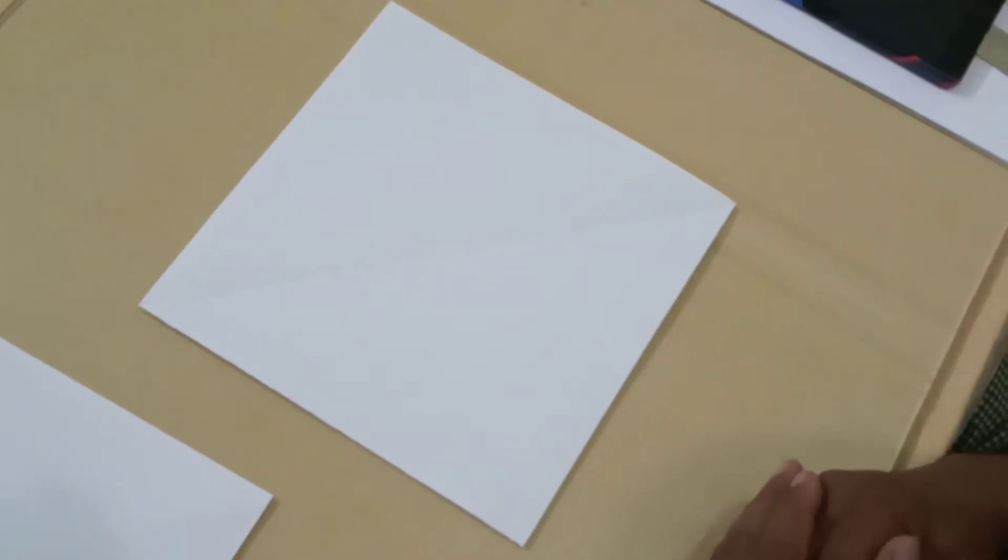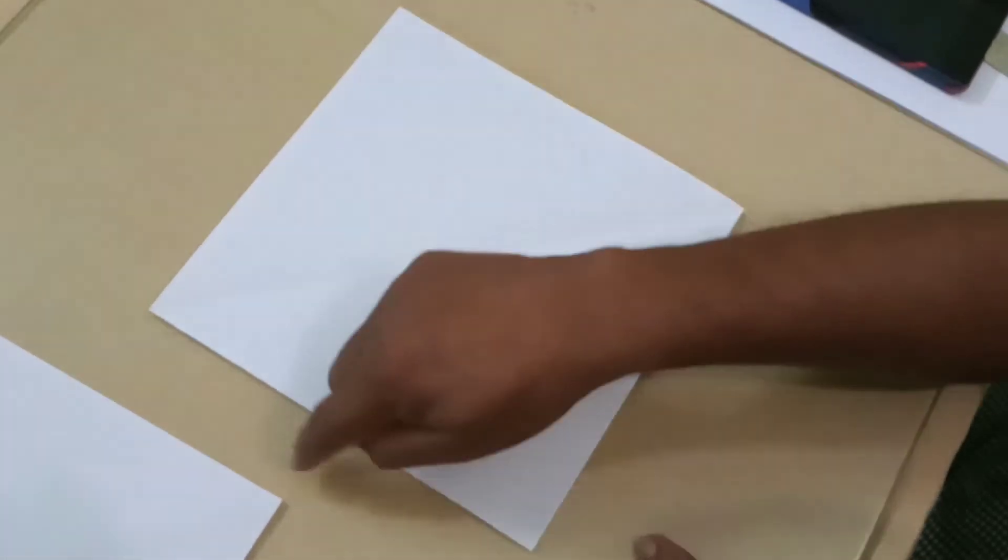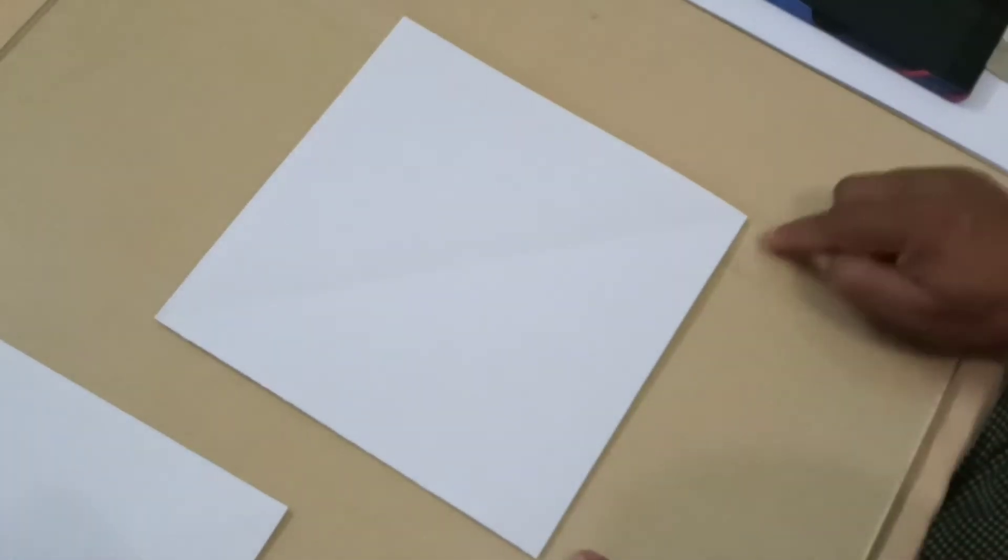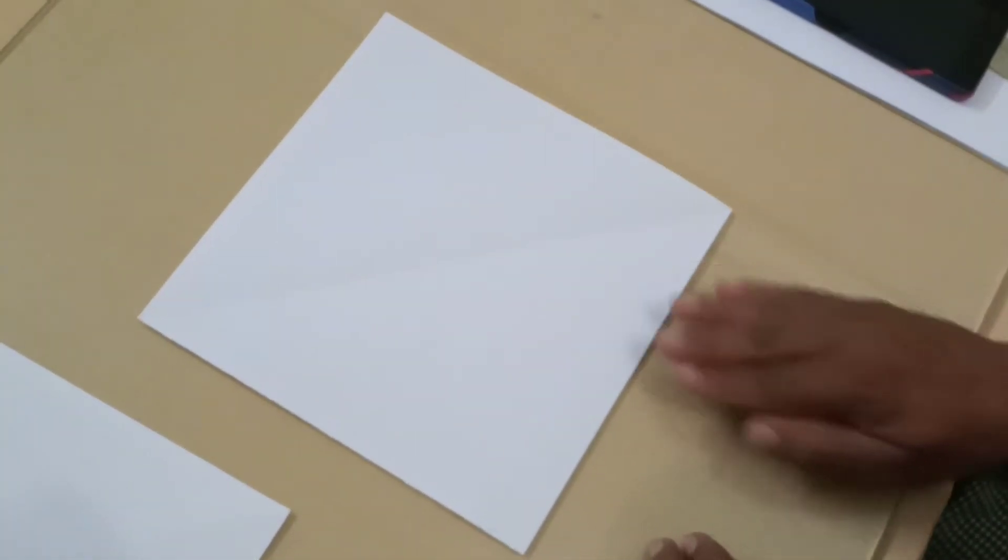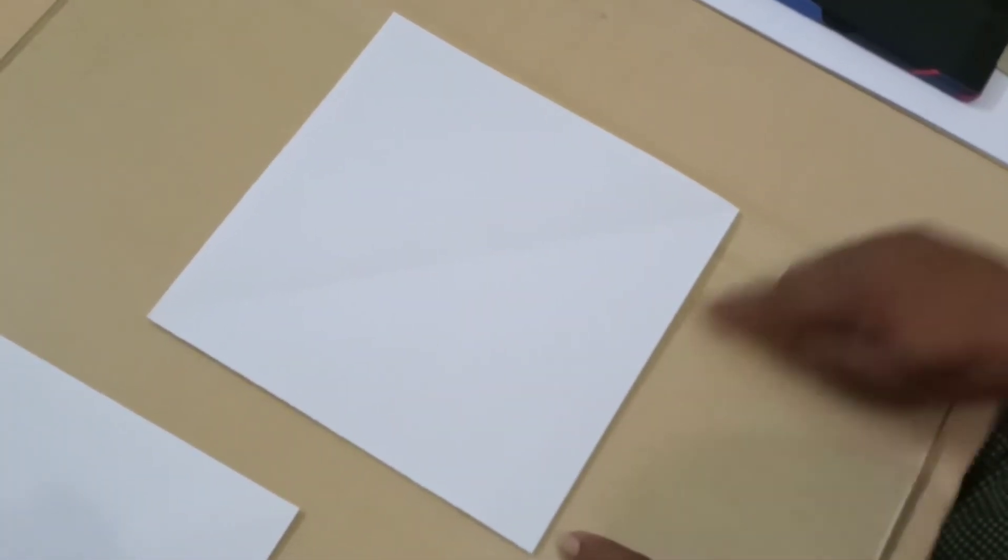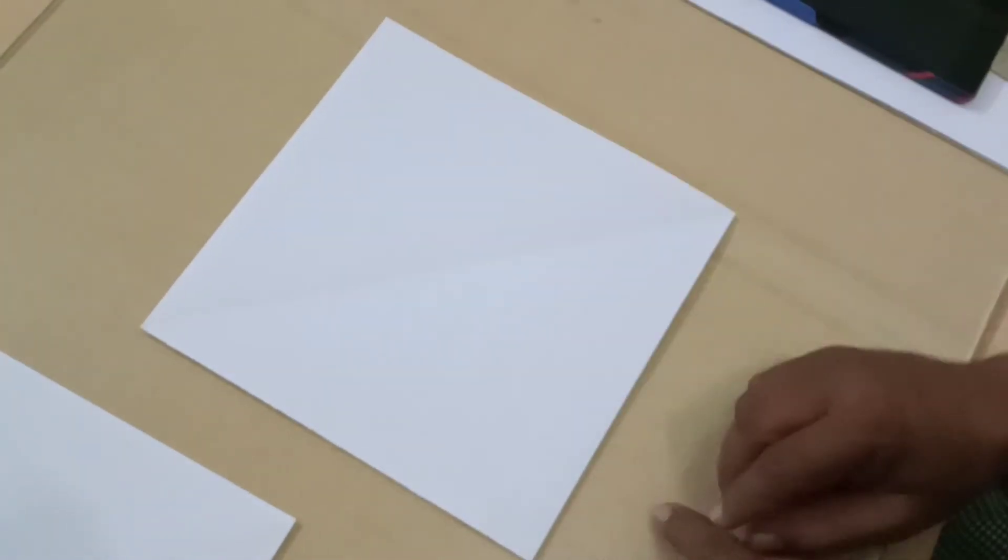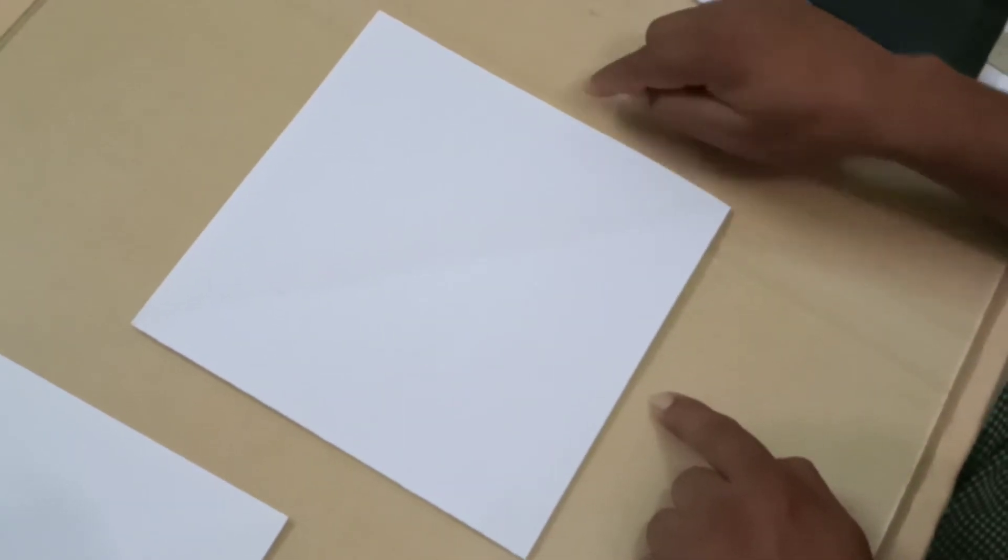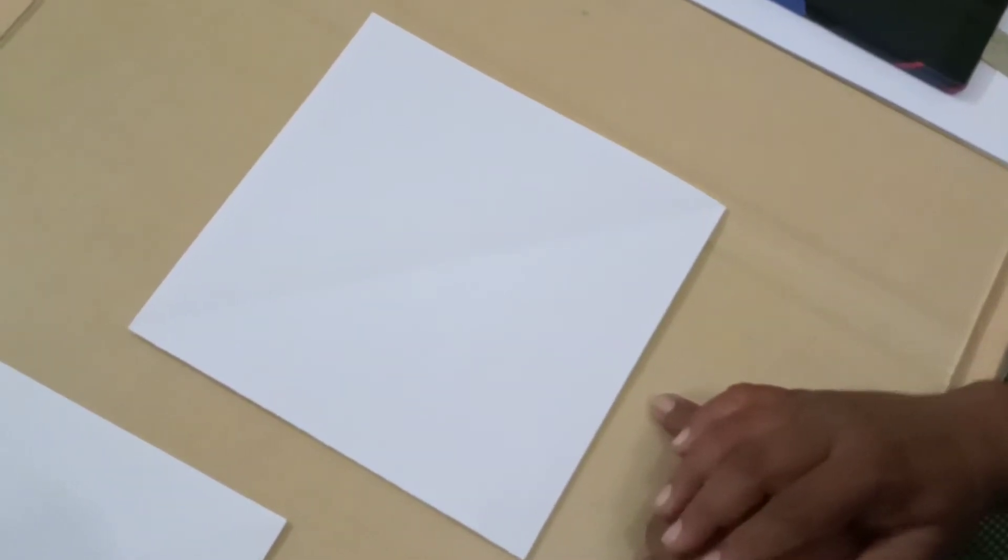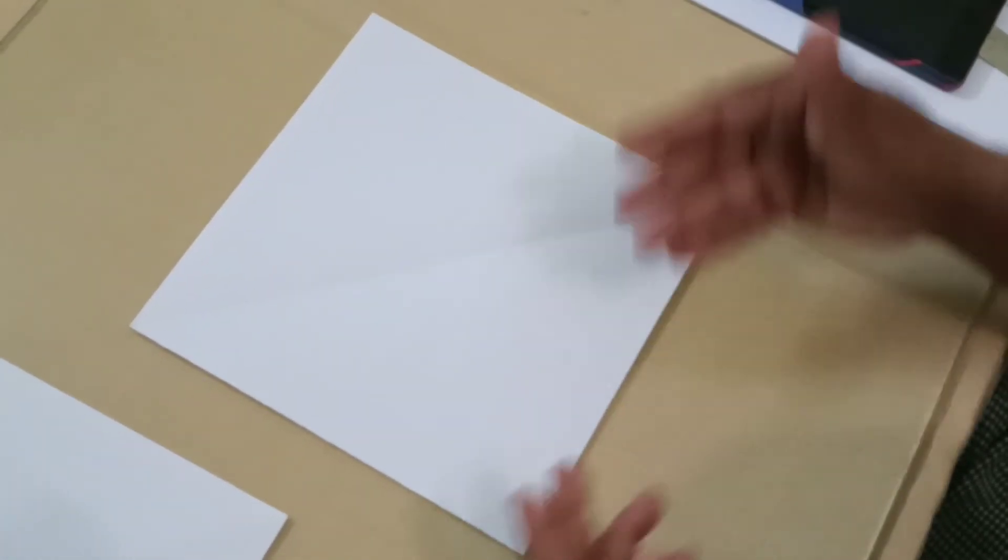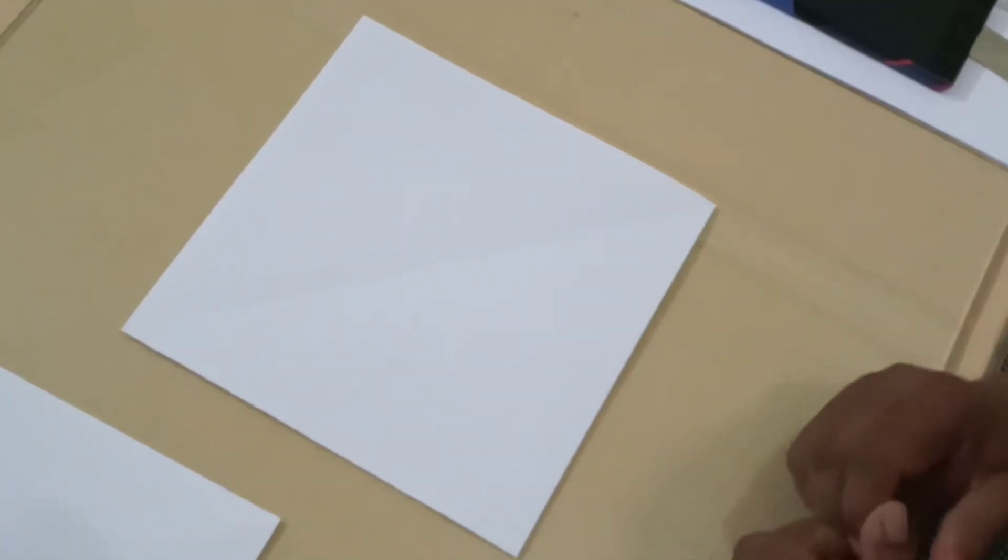We know that all the sides of the square are equal. We do not know the measurement of the sides. So let us say that the side is S. In that case the area of the square will be S into S which is S squared. Suppose the side is 10 centimeters then the area would be 100 square centimeters.